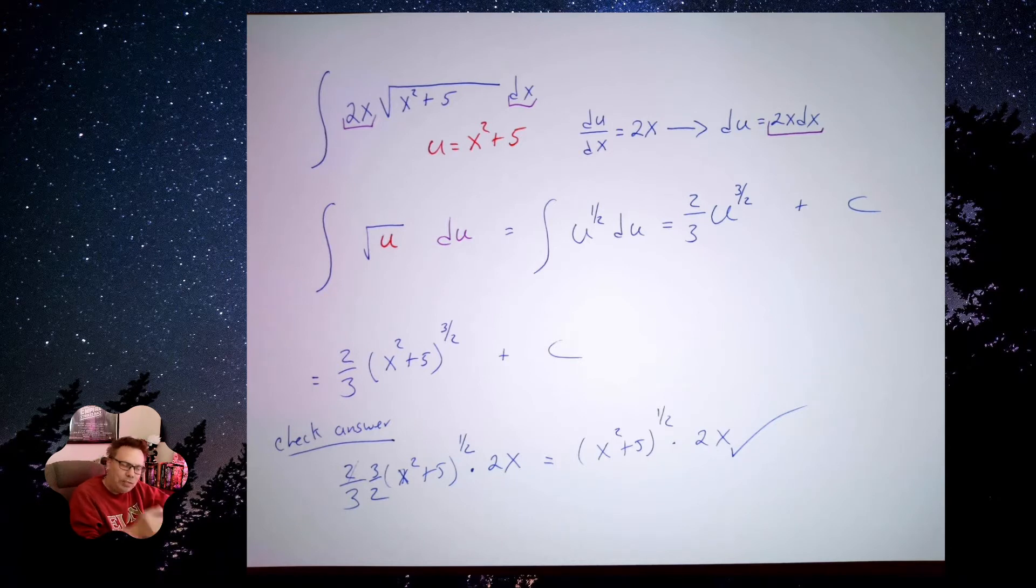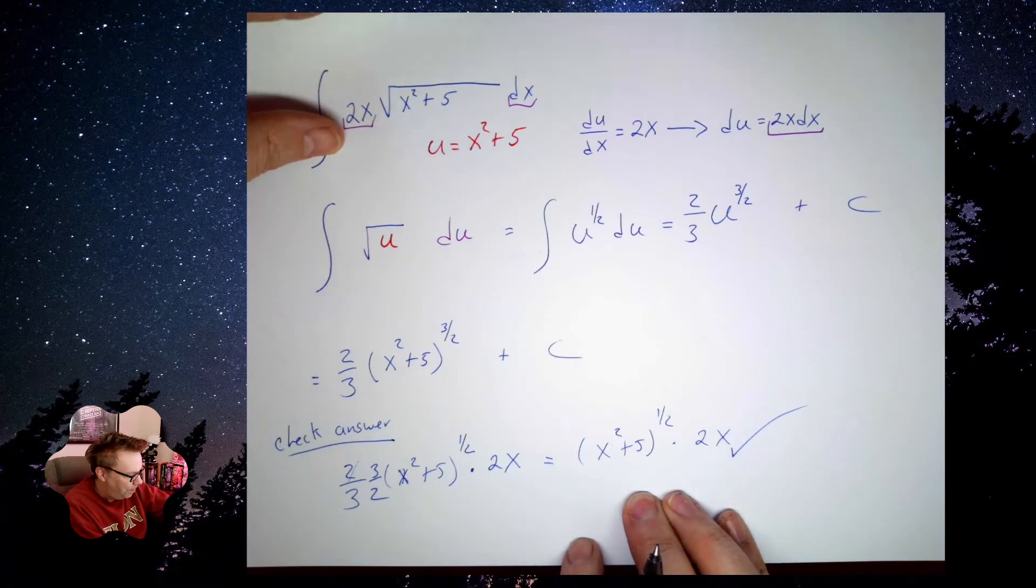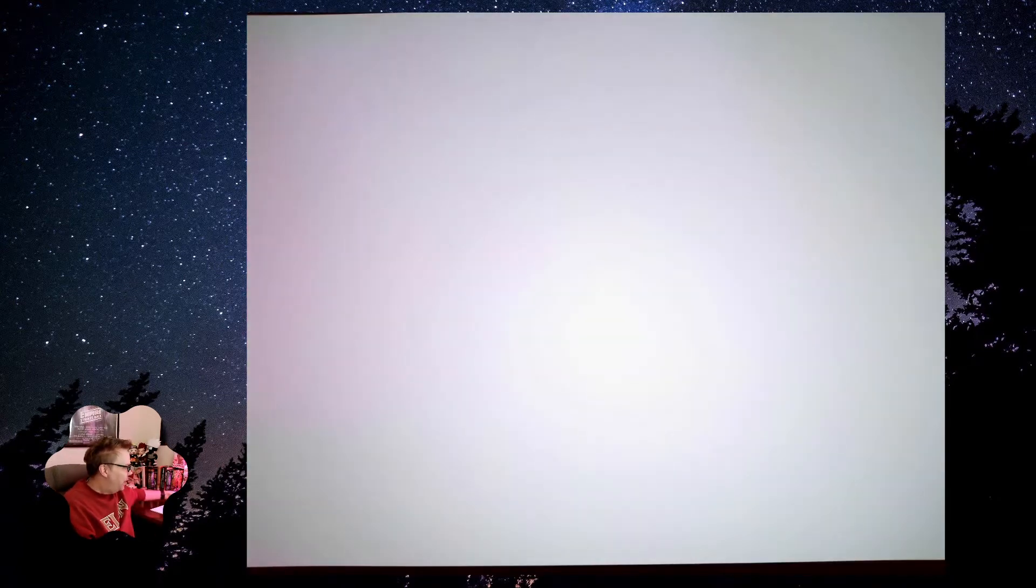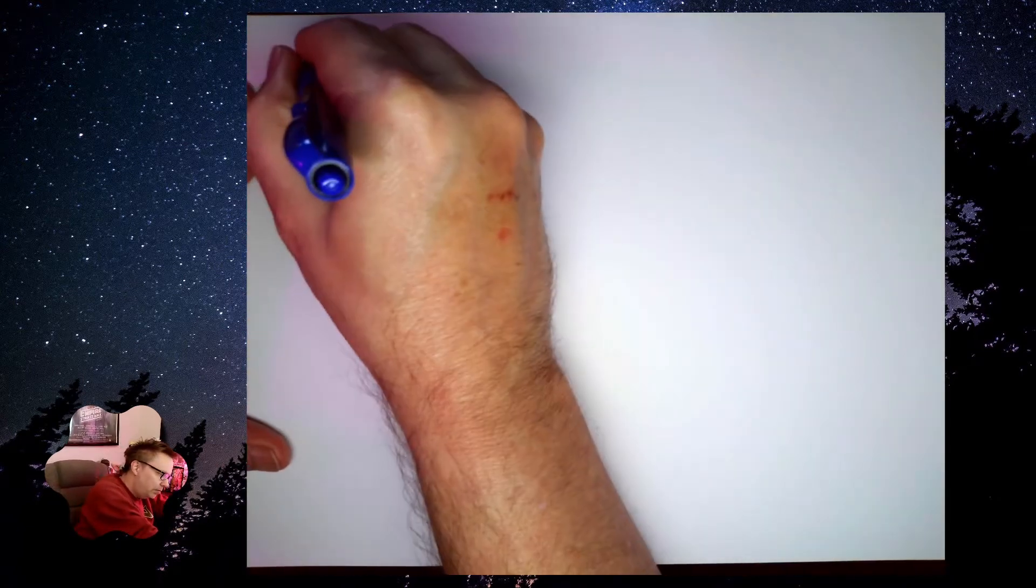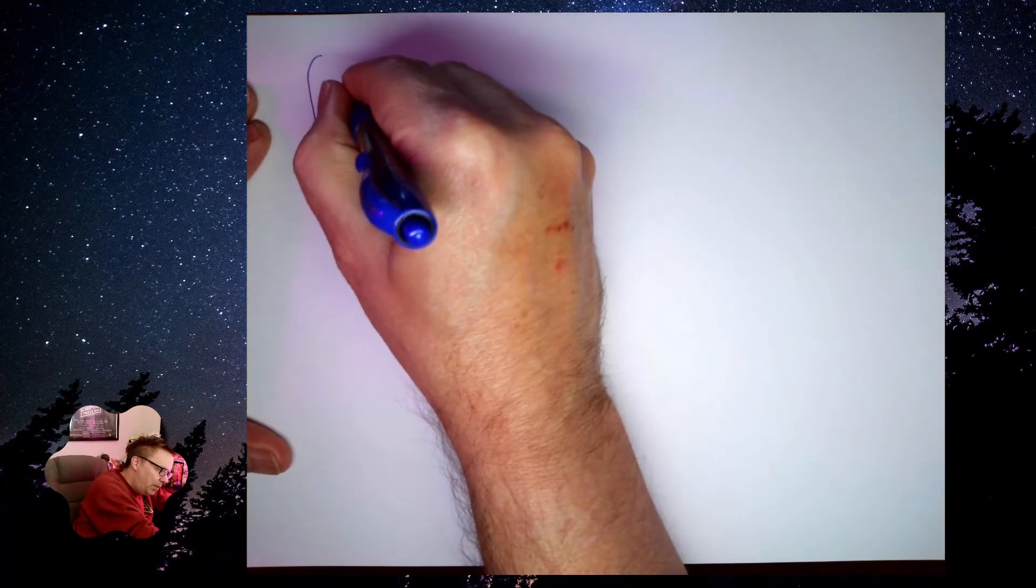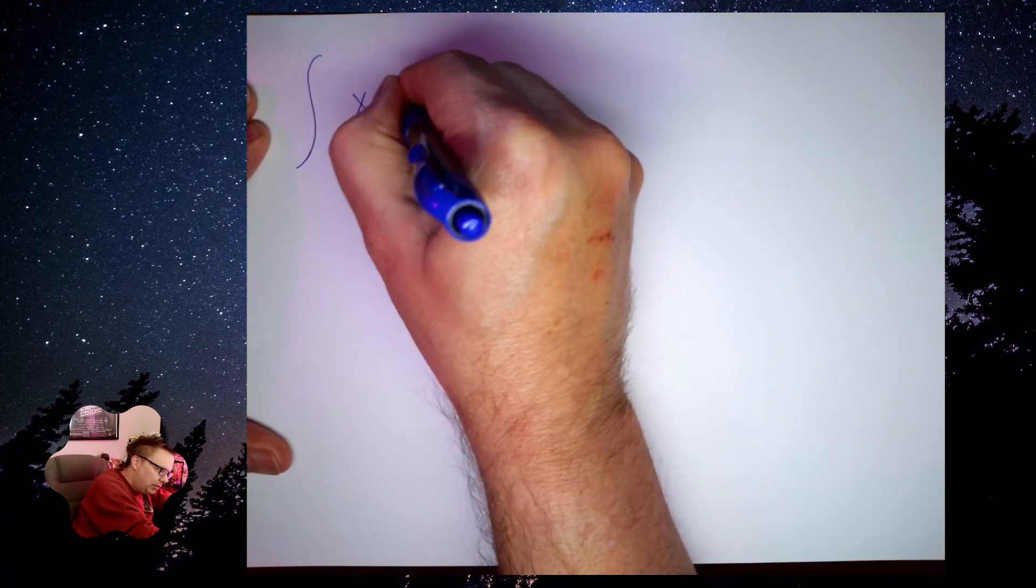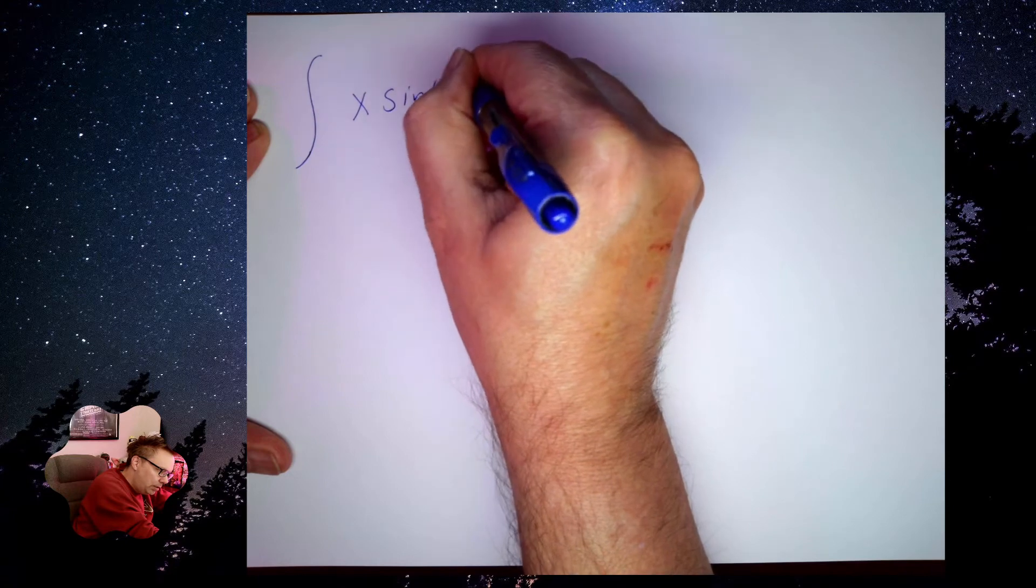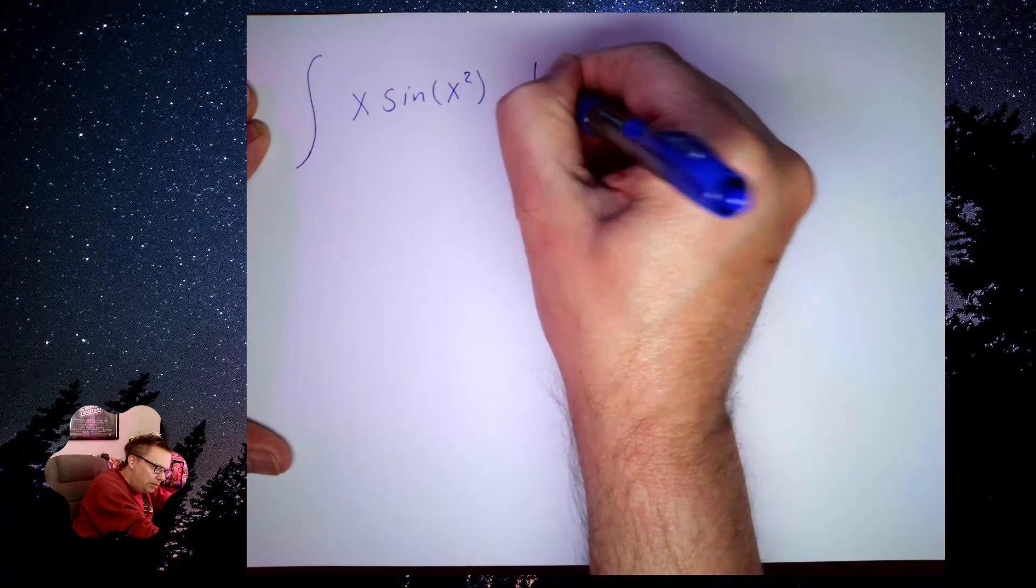So there's one u substitution. Let me do another one really quickly. So in this integral, I'm going to deal with x sine of x squared dx.